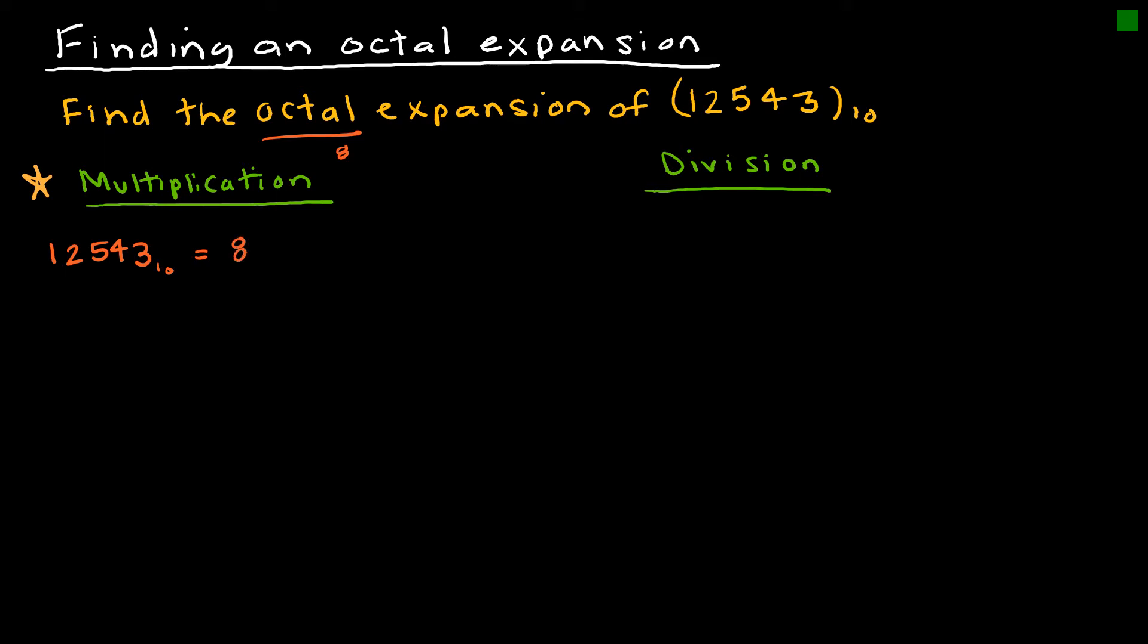I'm going to say this is 8 times 1,567 and I had a remainder of 7. I'm going to write it just like that. Always write your remainder at the end.